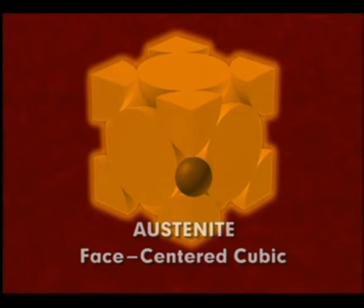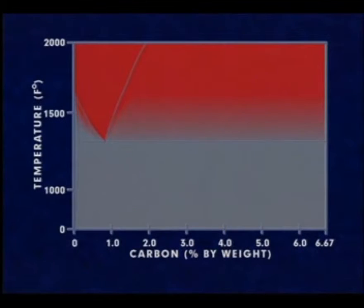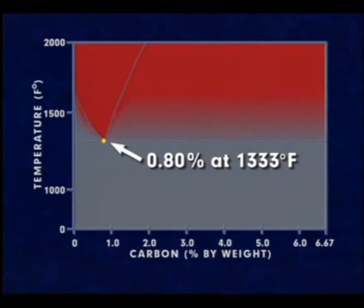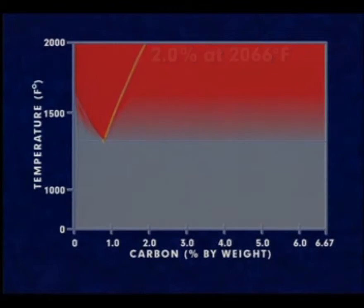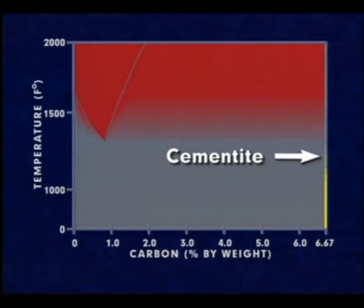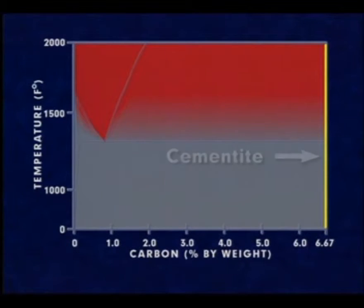Austenite's crystal structure allows it to absorb up to 0.80% of carbon at 1,333 degrees Fahrenheit, increasing to a maximum of 2.0% at 2,066 degrees Fahrenheit. The right-hand side of this iron-carbon phase diagram represents cementite, also known as iron carbide. Cementite contains 6.67% carbon.